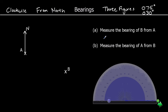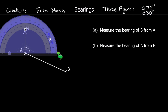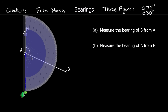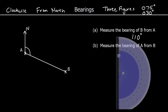The first question says: measure the bearing of B from A. So it's from A — that means we're starting at A and going to B. The one where it says 'from' is where we start. So the bearing of B from A means this angle here, measured from north and clockwise. If we take our protractor and spin it around until 0 is lined up with our north line, and measure clockwise, we get 110 degrees. So that's our answer.